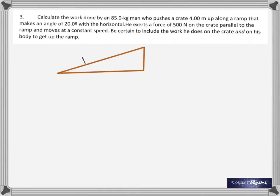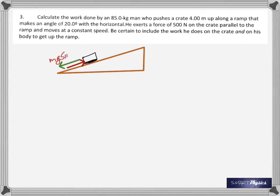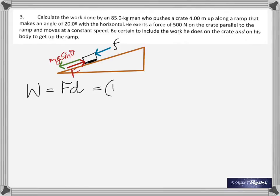Looking at the diagram: there are two forces shown. One is the force he's applying, and the other is the component of weight, mg·sinθ. Work is W = Fd. There's also friction acting against the motion, so the total force acting downward is mg·sinθ plus friction.